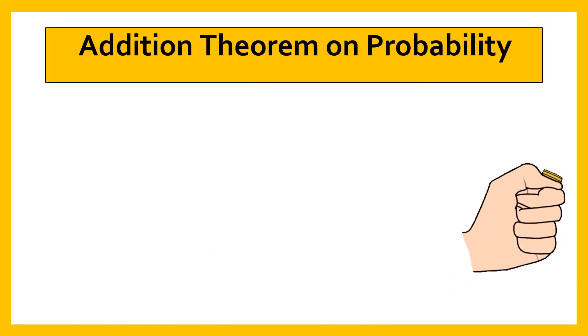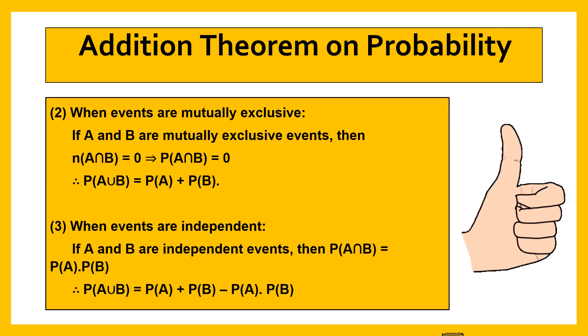Addition theorem on probability. When events are mutually exclusive, if A and B are mutually exclusive events then we can use this formula.